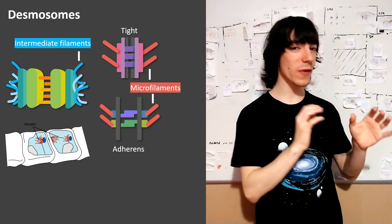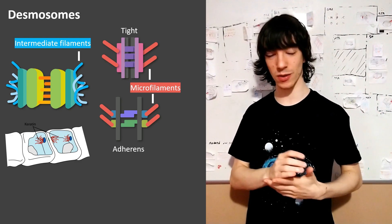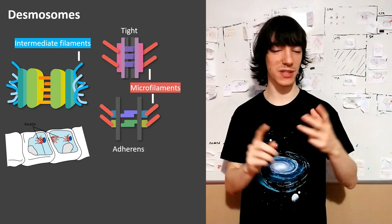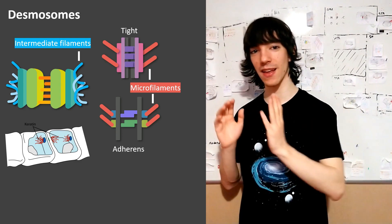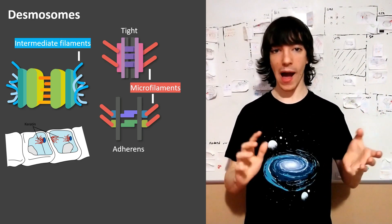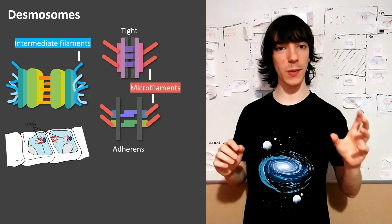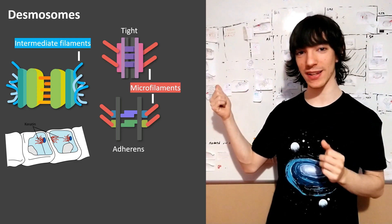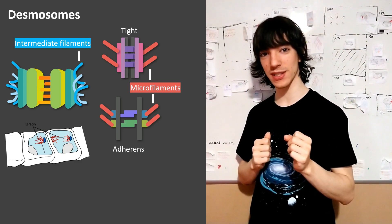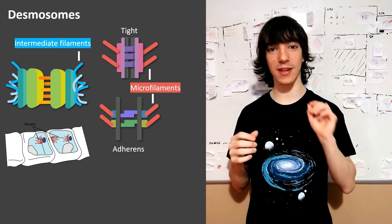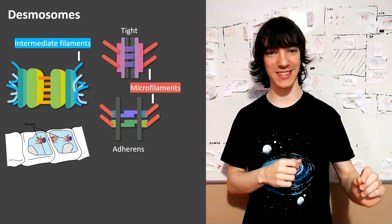And this is important because of all the filaments in the cytoskeleton, like actin microfilaments, intermediate filaments which are made of other proteins like keratin or vimentin, depending on the cell type, and microtubules, made of tubulin, the intermediate filaments, the ones that desmosomes connect, are the strongest ones. Other filaments would break under the tension that intermediate filaments are able to resist.